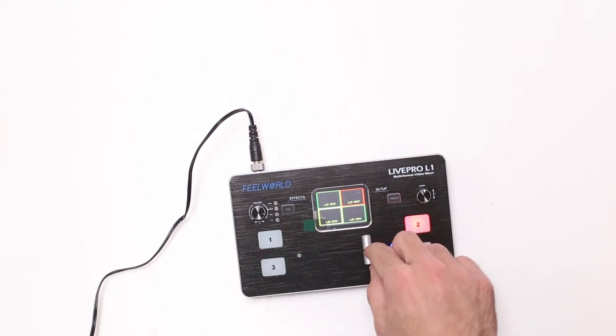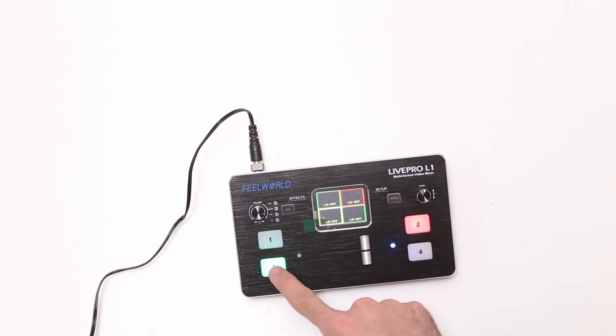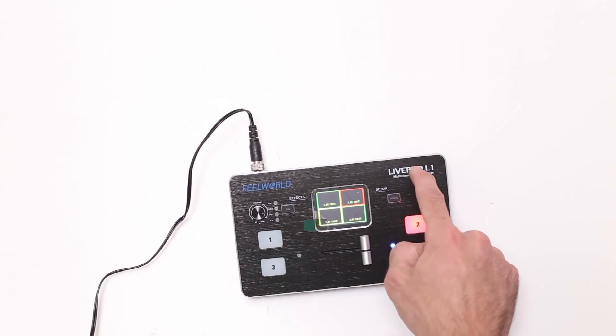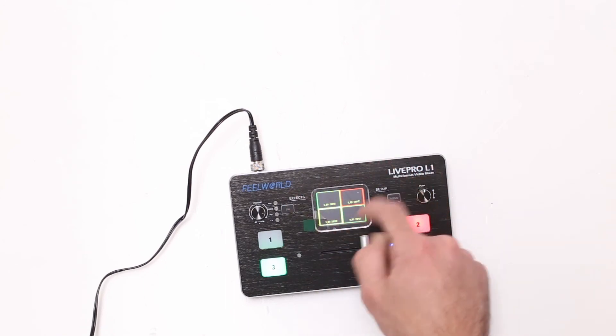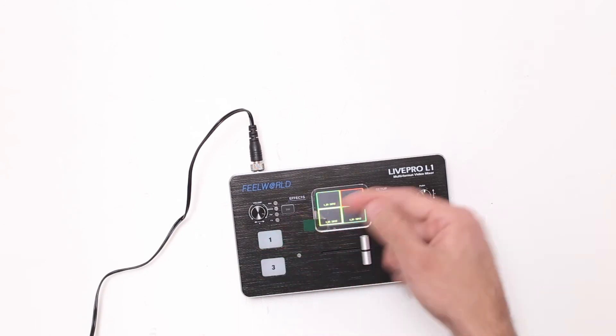Now something that is a bit of a problem is that you cannot, for instance, select let's say channel 3 and channel 1. Channel 1 is my camera, channel 3 is the console. I cannot select it to take both audio from each channel, but rather it will take audio from the channel that I am on right now.